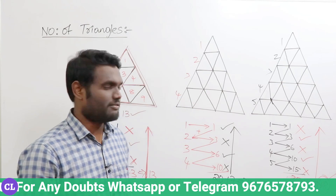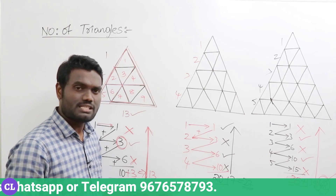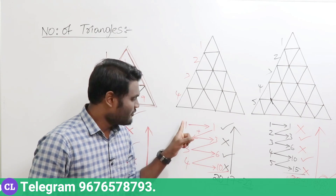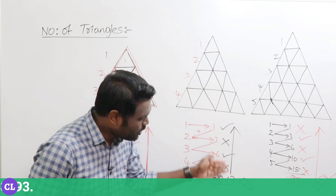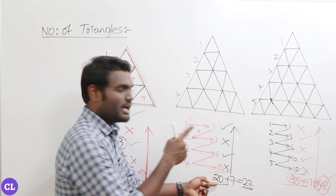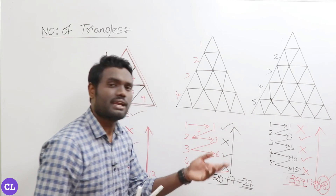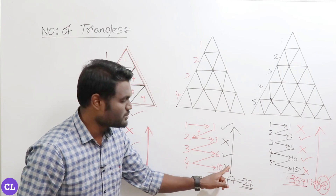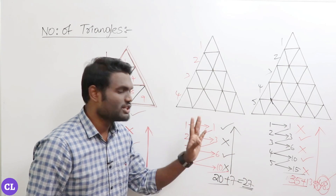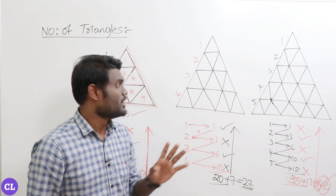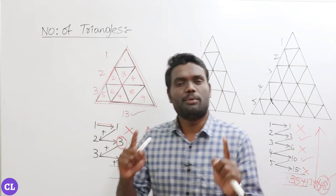So whenever you have questions in this format, follow this technique: know the number of divisions, then build the cumulative sequence starting at one and adding the next division number each time — one, three, six, ten — then add all those numbers. After that, start from the bottom, take alternate positions and add those numbers. Then add that result to the first sum for the total. For example: twenty plus seven equals twenty-seven triangles. This simple short trick will help you answer in just two seconds.